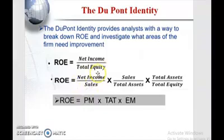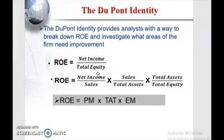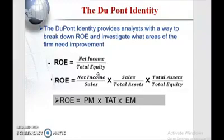The first component is the profit margin, which is equal to net income over sales. It means how much income I can generate for every dollar of sales I have. For example, if we have a profit margin of 0.05, that means I can generate five cents for every dollar of sales I have.